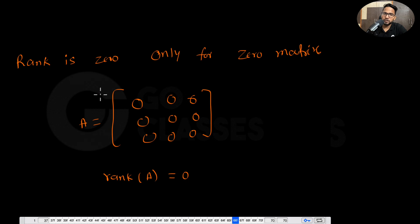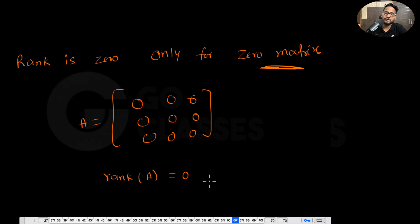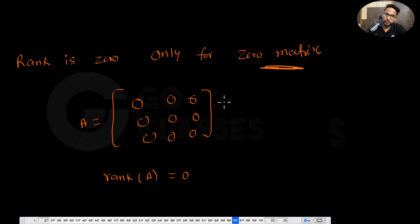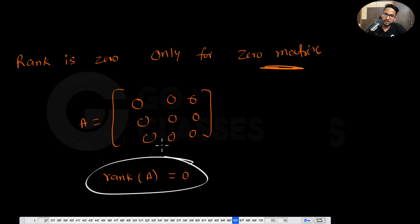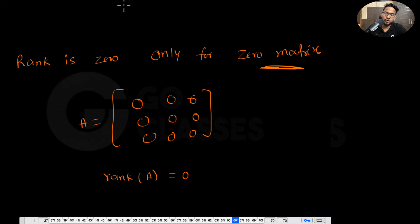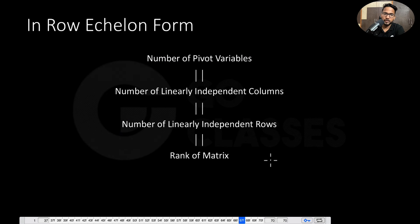Rank is always non-negative — it can be 0, but only when the matrix is a zero matrix, meaning all entries are 0. Otherwise rank is non-zero. If the number of pivot elements is 0, it means all entries must be 0. So rank 0 means the matrix is a zero matrix, and vice versa: if the matrix is a zero matrix, the rank is 0.